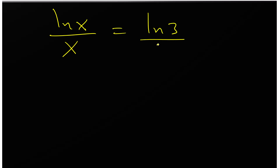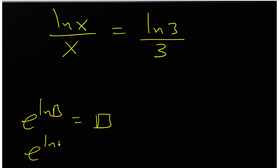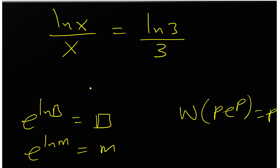Now we have ln(x)/x = ln(3)/3. When we have e raised to ln of something, the answer is that something. We want to apply the Lambert W function. The W function rule is: W of p times e to the power p equals p. I'll put a link to a video that explains the Lambert W function in more depth.